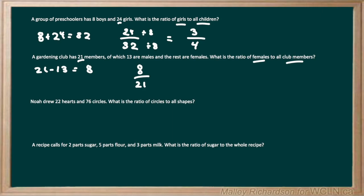Moving on to question 3, we have Noah who drew 22 hearts and 76 circles. We need to find the ratio of circles to all shapes. We have the number of circles as 76, and now we need to find all shapes by adding the number of hearts to the number of circles: 22 plus 76 gives us 98, so 98 is going to be our whole. To write our part-to-whole ratio, we have 76 circles on top divided by our whole — the number of all shapes — which is 98.